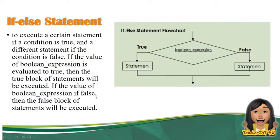Similar to the if statement, to execute a certain statement, it still needs to pass through the conditional or boolean expression. But the difference is that when the statement evaluates to false, there is still a block of code to execute — when the condition is false, it still has a block of code.